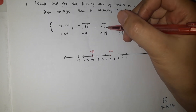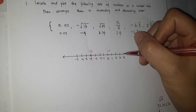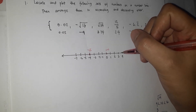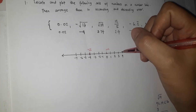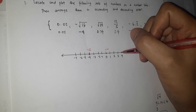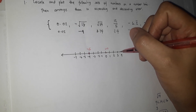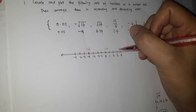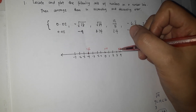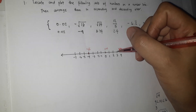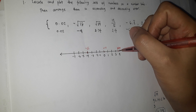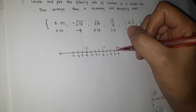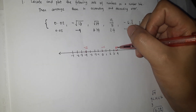Square root of 14 is approximately 3.74. If we divide the space between 3 and 4 into 10 equal parts, 3.74 would fall at the 7th mark — almost in the middle between the 7th and 8th marks. So we estimate and plot it there.